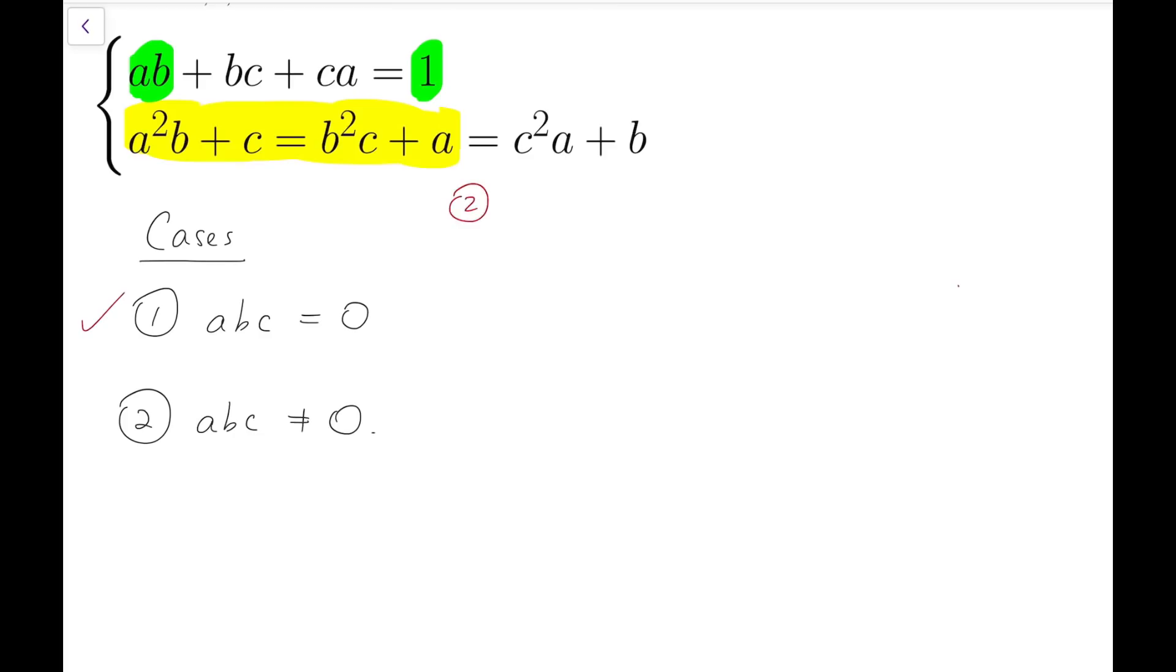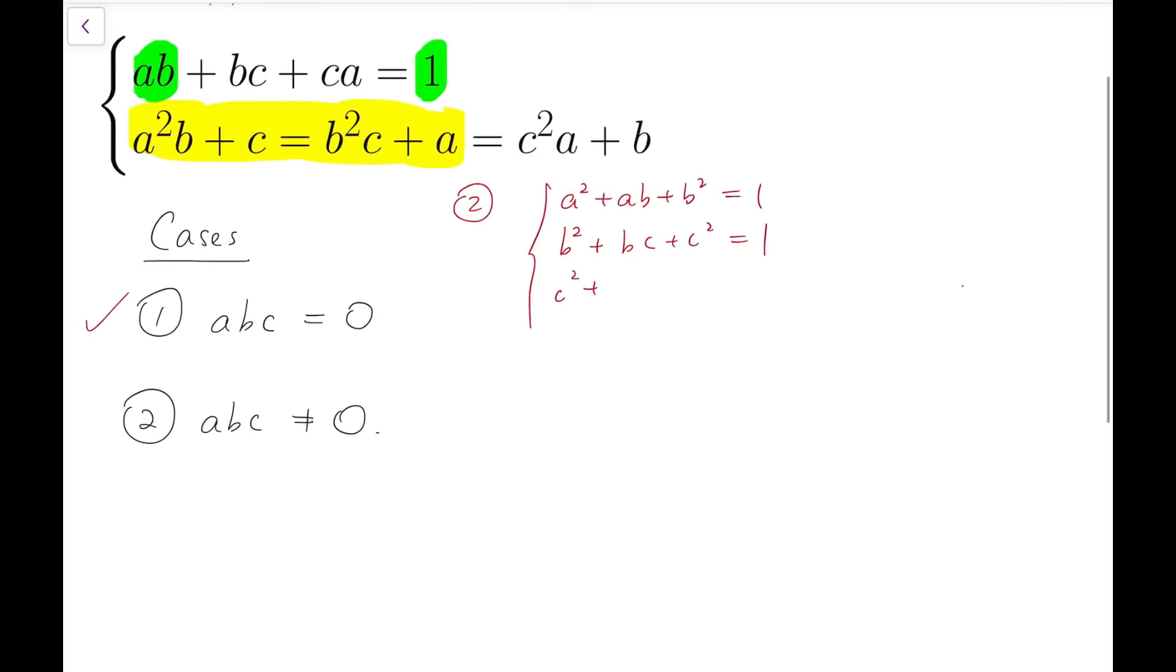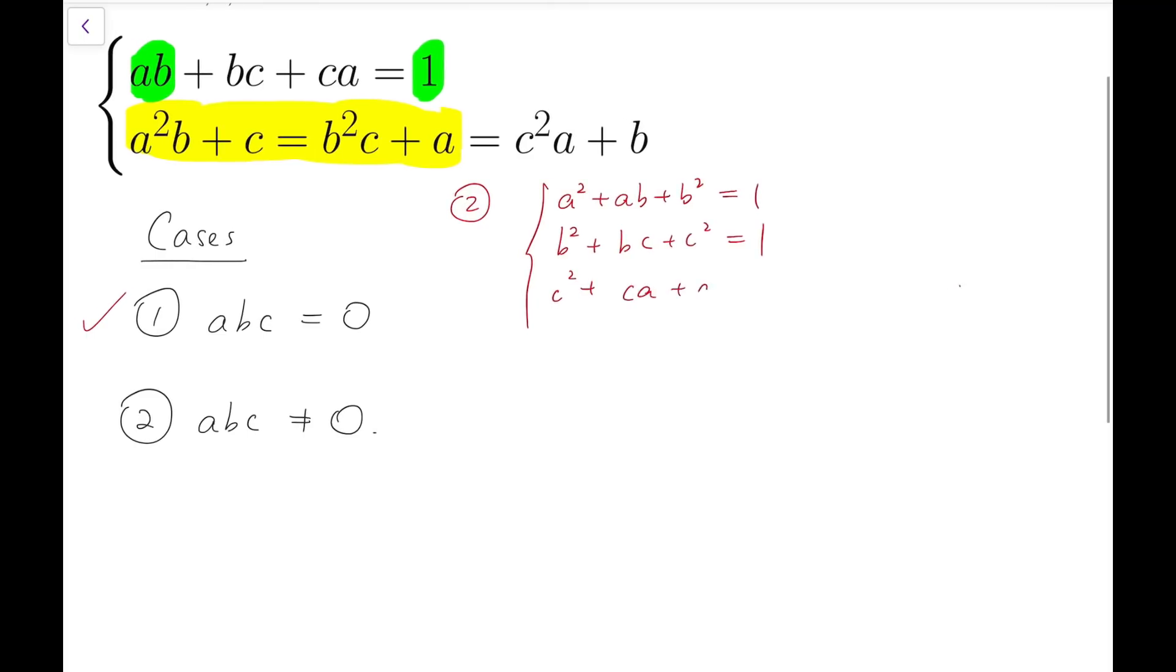Now here comes the second case. We'll have three equations actually. a² + ab + b² equals 1, and then rotating the entries, we'll have b² + bc + c² equals 1, and the third one is c² + ca + a² equals 1. So we have three equations. Now we add them.